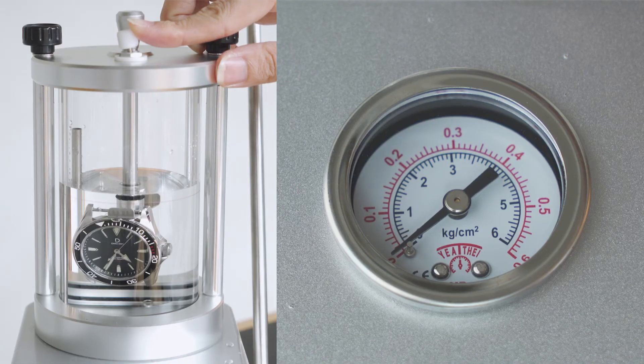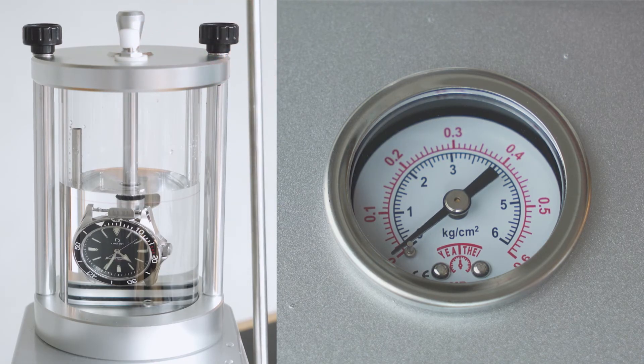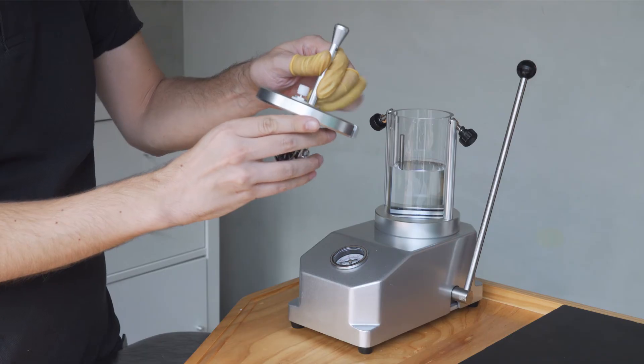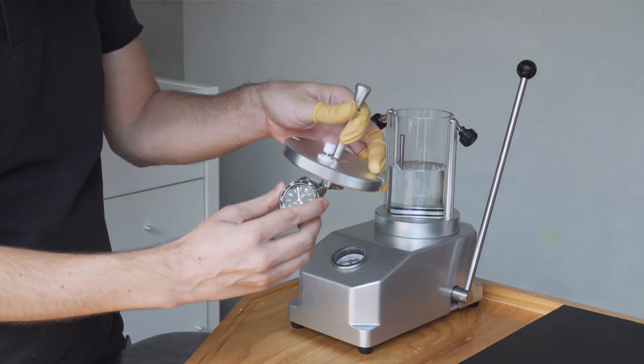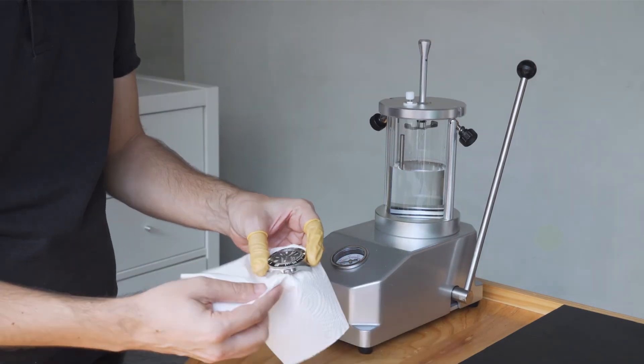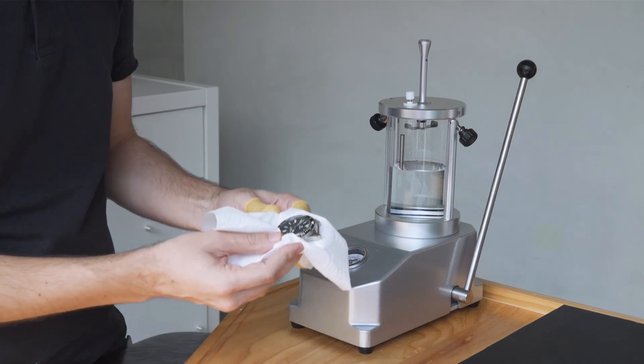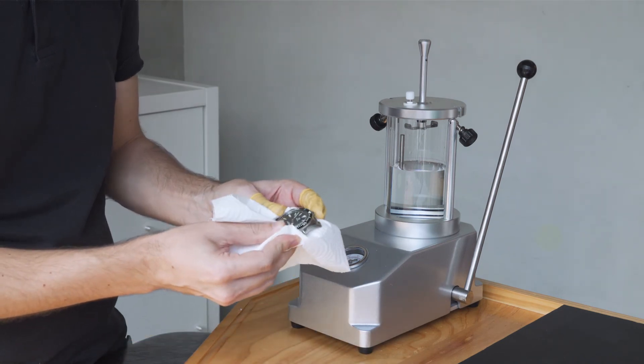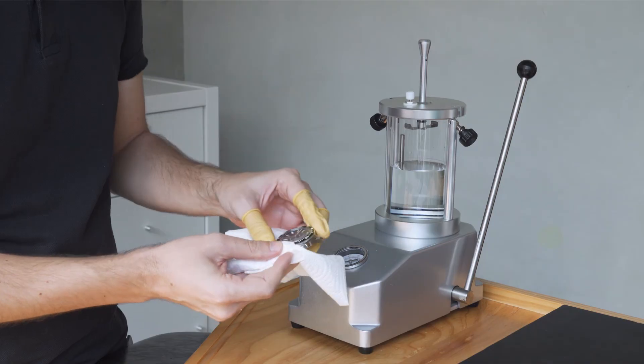All air has been released and there was no continuous stream of bubbles. This means the watch passes the test. I'll take out the watch and dry off the case. Check that all the gaps and corners are completely dry. This is how you do a water resistance test using a pressure tester.